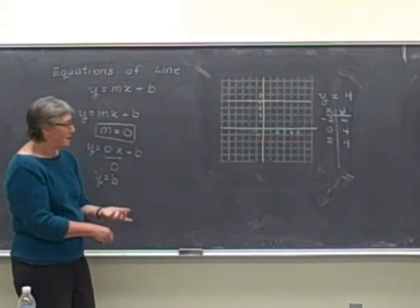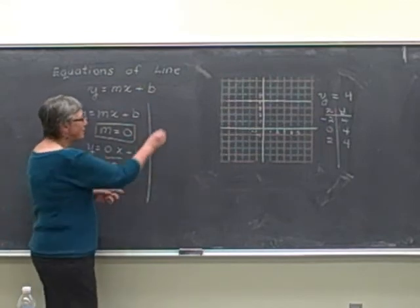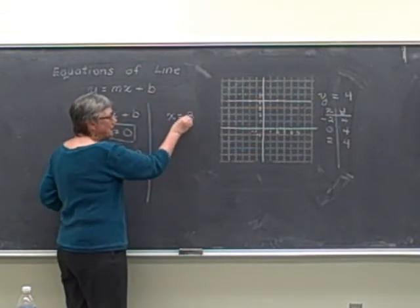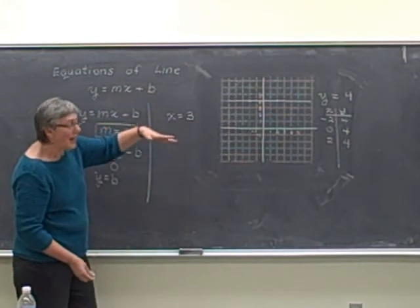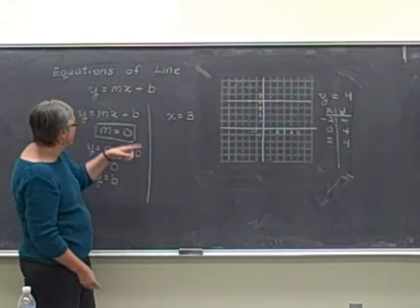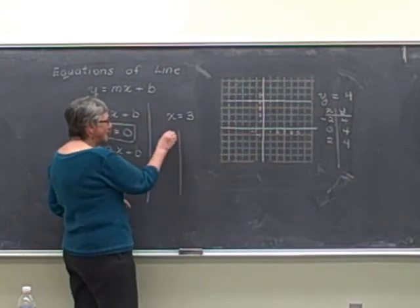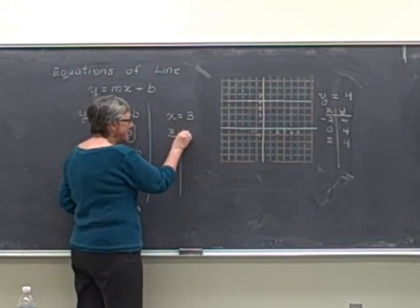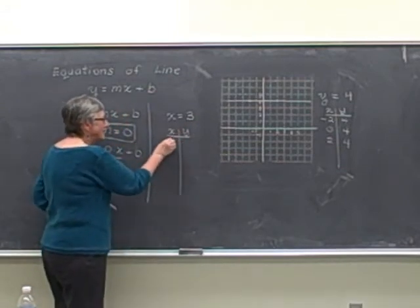The second kind of special line, we can't even write in the form y equals mx plus b. It's of the form simply x equals a number. For example, x equals 3. Here, we're not going to be able to talk about the slope because we can't put it into this form. Just like our line y equals 4, when we have the line x equals 3, it means that no matter what y values we have, x is equal to 3.